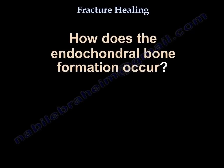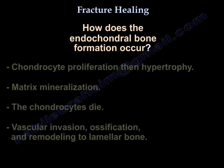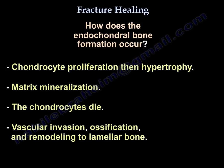How does endochondral bone formation occur? The chondrocytes proliferate, then hypertrophy, then you get matrix mineralization. The chondrocytes die and then you get vascular invasion, ossification, and remodeling to lamellar bone.